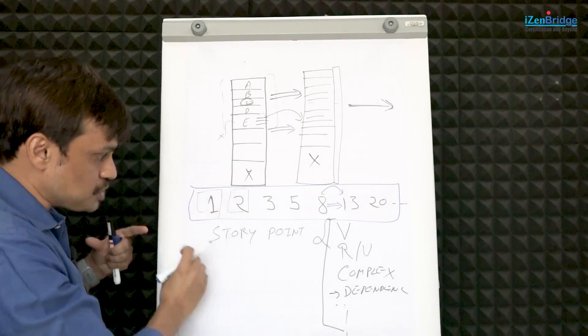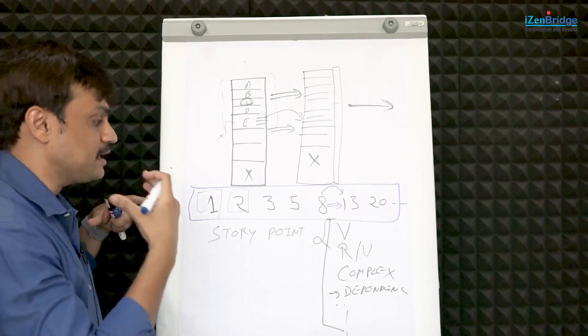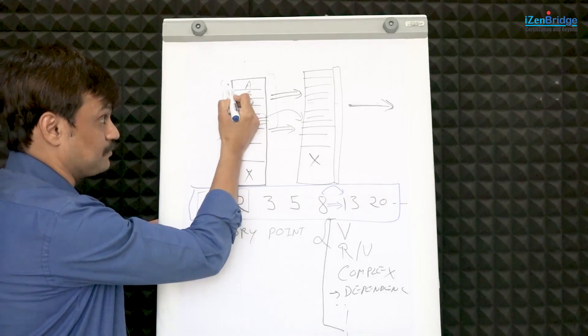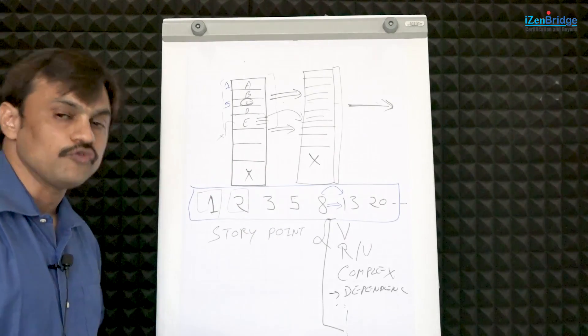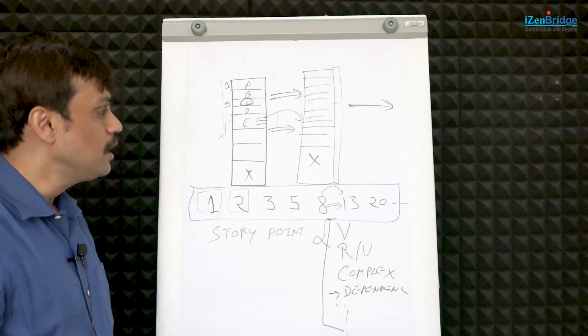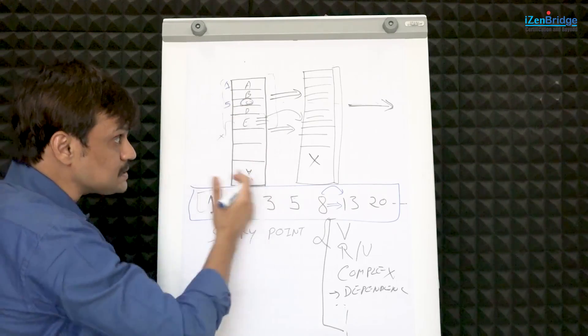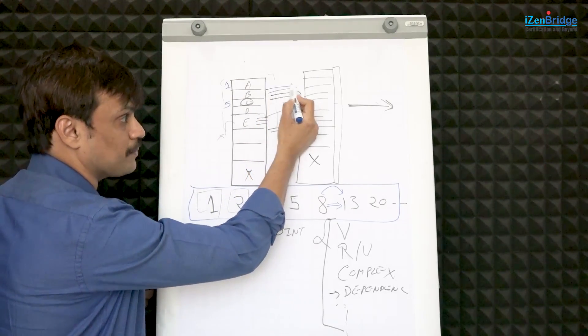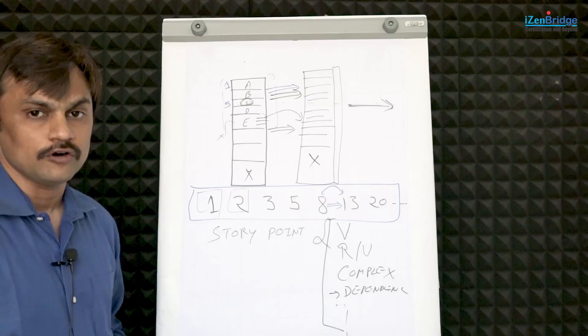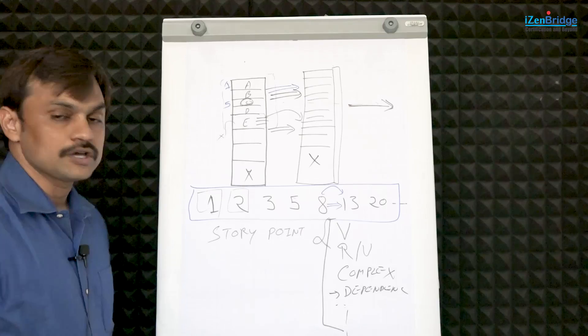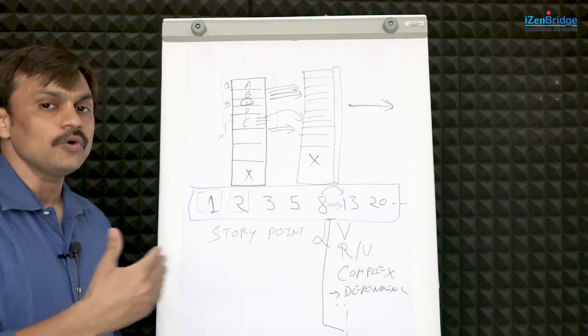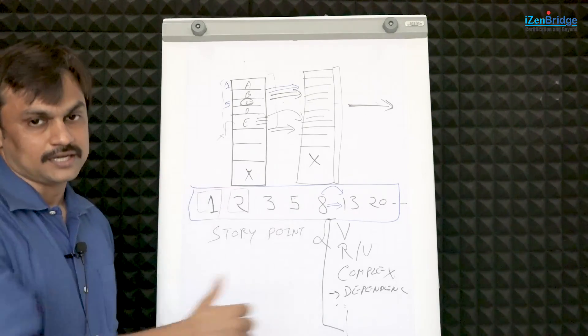The judgment is made by the team, and when they are making the judgment about categorizing something 1 or something 5, they are considering various factors like volume of work, complexity, risk involved. And this understanding and judgment may evolve over a period of time, and we should not be shy of modifying our estimates based on the new learning, because the product backlog is expected to emerge as we go in our project progressively.